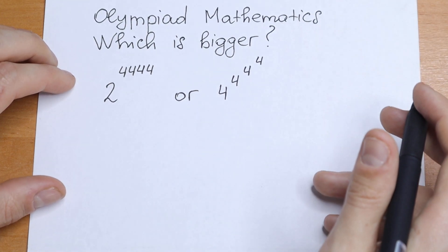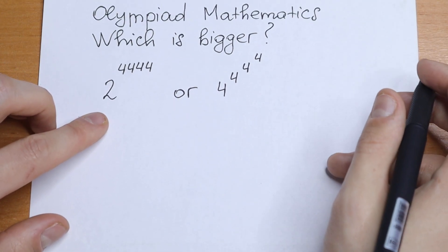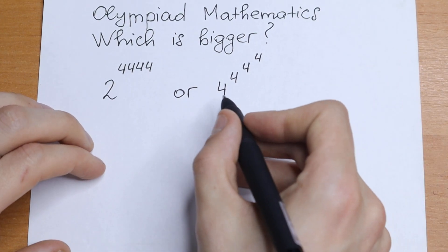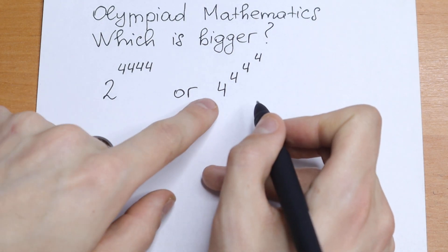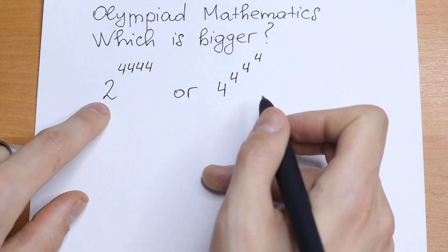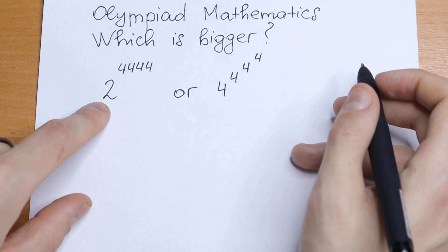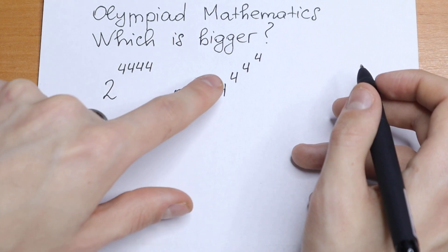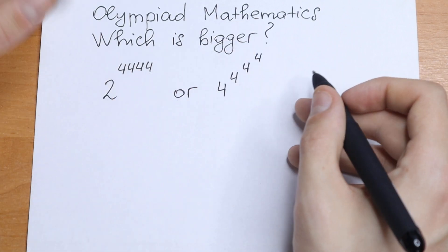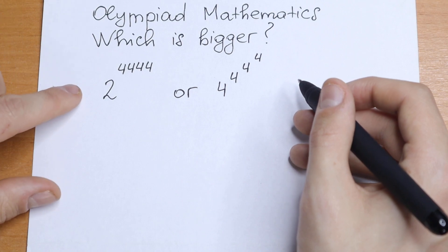So let's try to solve it. I want to suggest a really good trick. Take a look — on the right we have base of 4, and on the left we have base of 2. It's a really good case to take base of 4 here, because on the right it's a little bit complicated to use it.